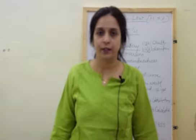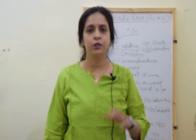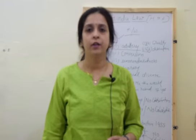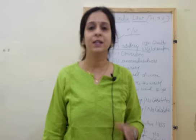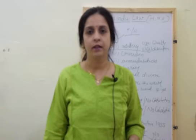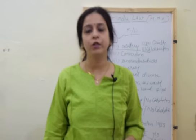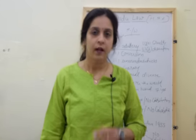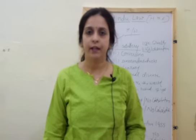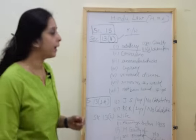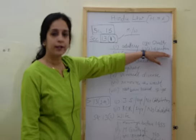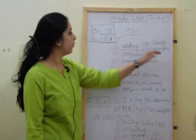Second is desertion — not living with the other party. Desertion is a ground for divorce if the spouse left the conjugal society for a continuous period of two years. After completion of two years, it becomes a ground for divorce. So desertion is a ground under Section 13(1)(ib).